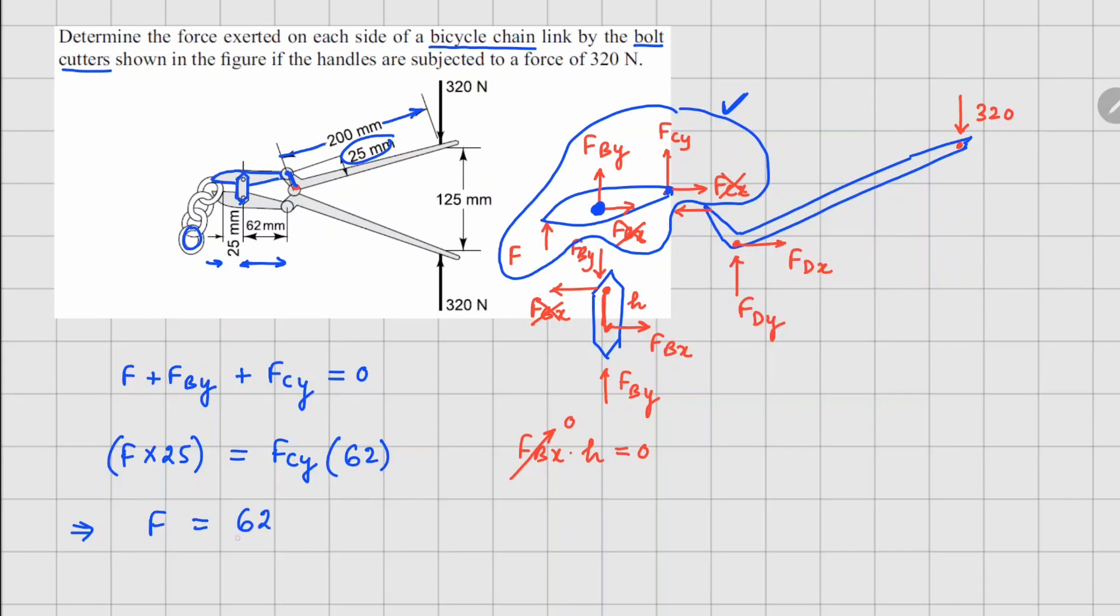From this we can see that your F is going to be 62 divided by 25 times FCy. So if you can find the value of FCy we have the value of F.